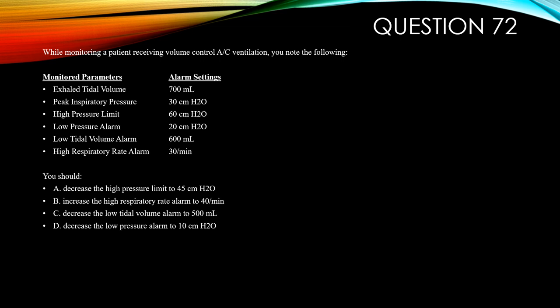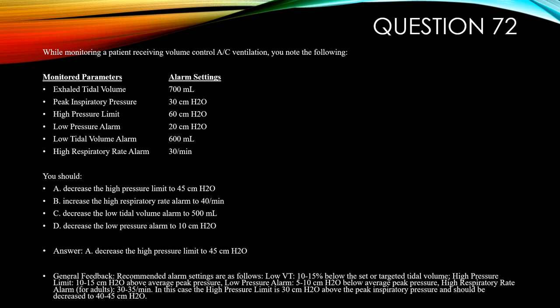The answer is A, decrease the high pressure limit to 45. Recommended alarm settings are: low tidal volume 10–15 below the set tidal volume; high pressure limit 10–15 above the average peak pressure; low pressure alarm 5–10 below average peak pressure; high respiratory rate alarm for adults 30–35. In this case, the high pressure limit of 60 is 30 above the peak inspiratory pressure of 30 and should be decreased to 40–45.